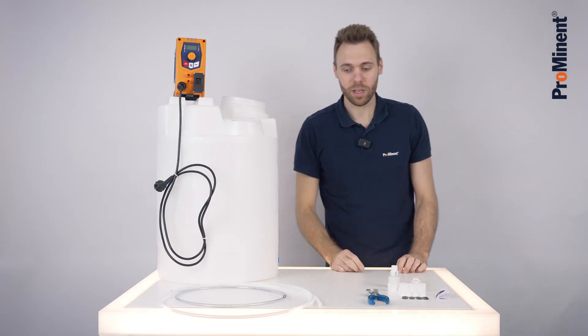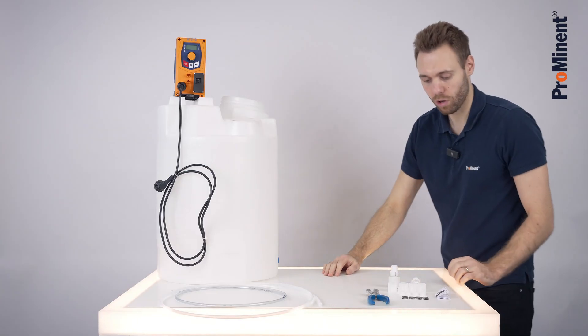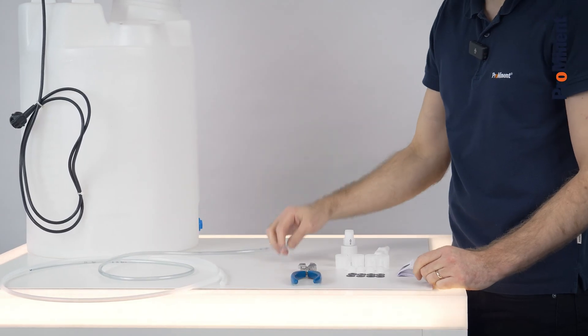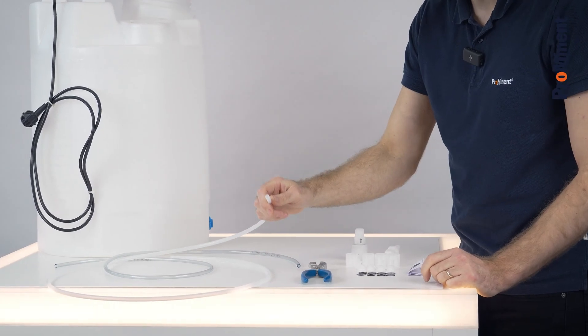As the next thing we need to pipe it up. For the suction side we use soft PVC hose and for the pressure side we use a hard PE hose.